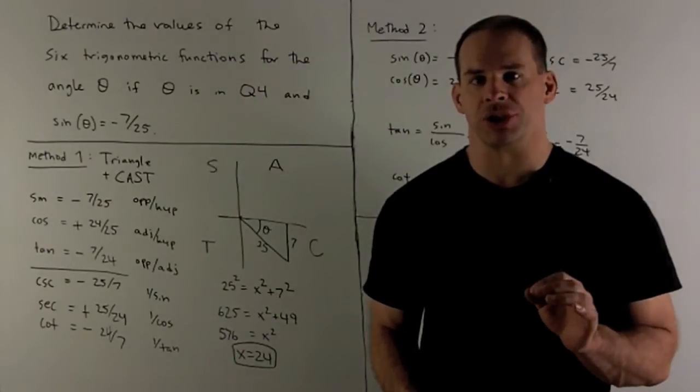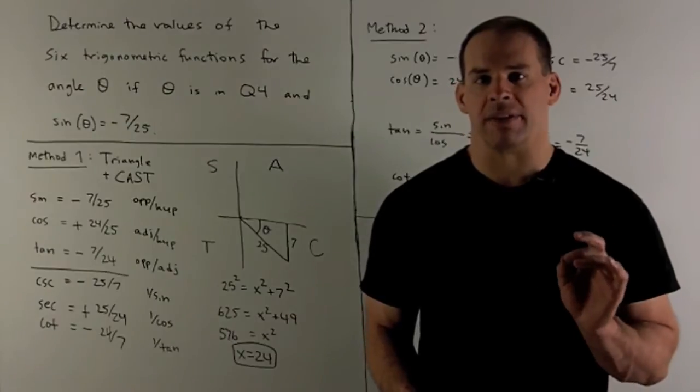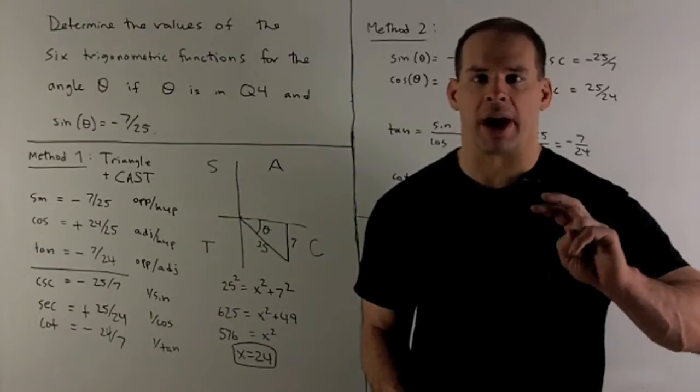Determine the values of the six trig functions for the angle theta, where theta is in quadrant 4 and the sine of theta is minus 7 over 25. We'll have two methods to get to our answer.